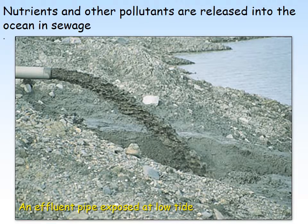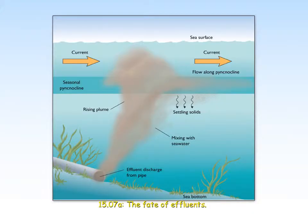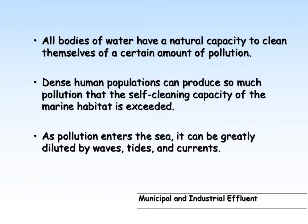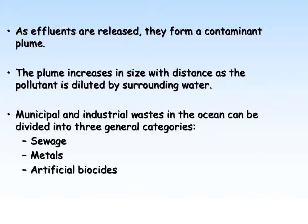We put lots of sewage into the ocean — in the western world most of it is treated, in developing countries less so. When sewage gets into the environment it puts in a whole bunch of stuff: organic carbon and nutrients. Sometimes the environment can deal with it, sometimes it can't. It depends on how it's released — sometimes as a point source in a very concentrated, localised area; sometimes more diffuse, like sewage released into groundwater that eventually makes its way to the ocean.